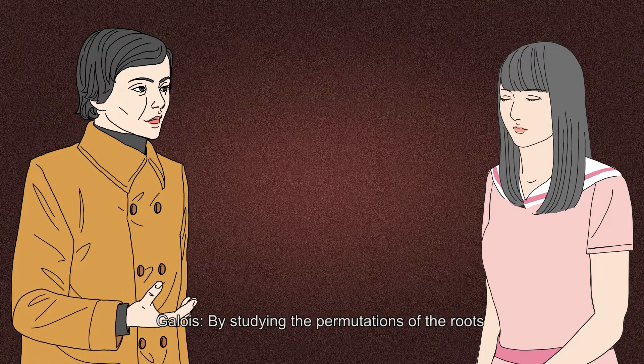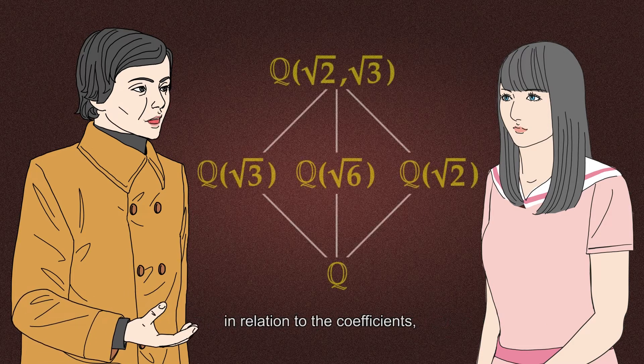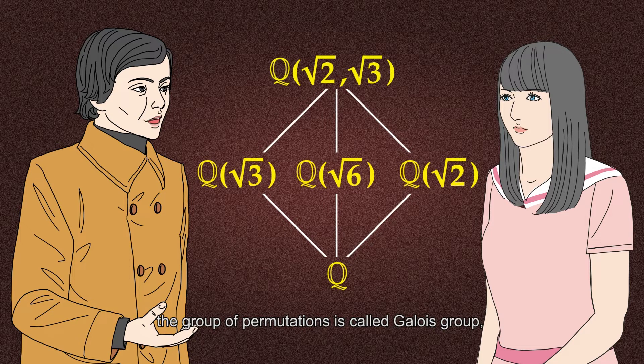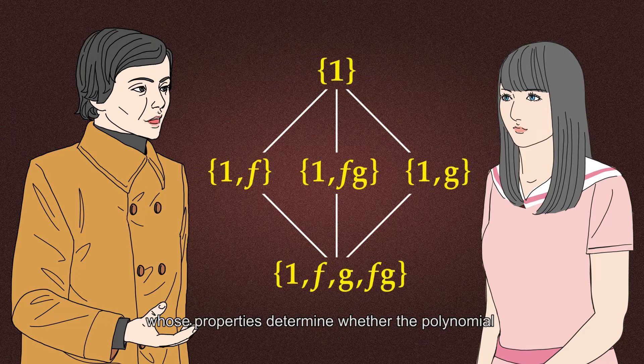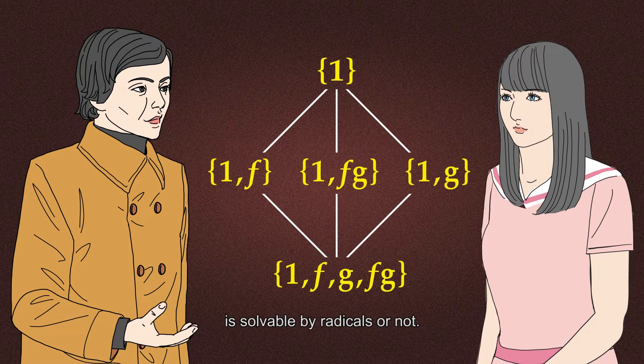By studying the permutations of the roots in relation to the coefficients, the group of permutations is called Galois group, whose properties determine whether the polynomial is solvable by radicals or not.